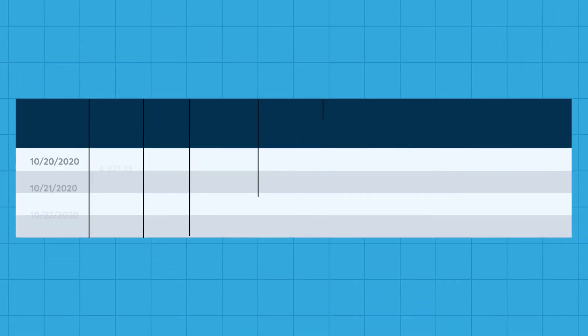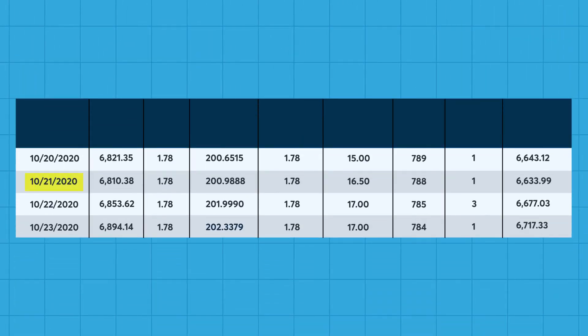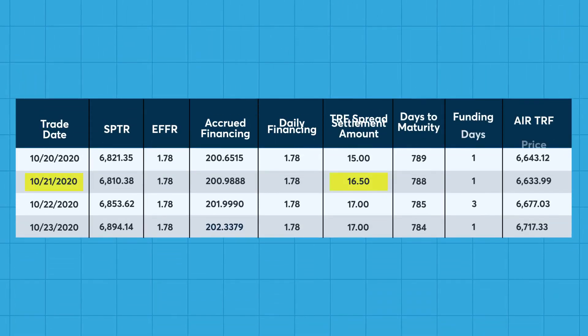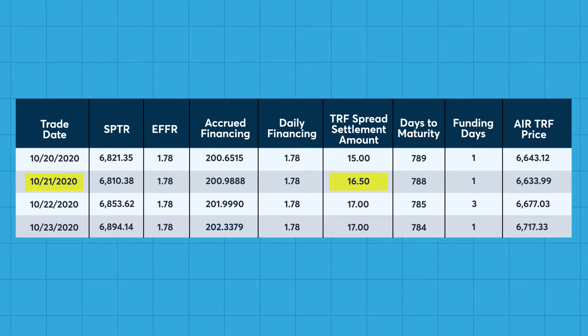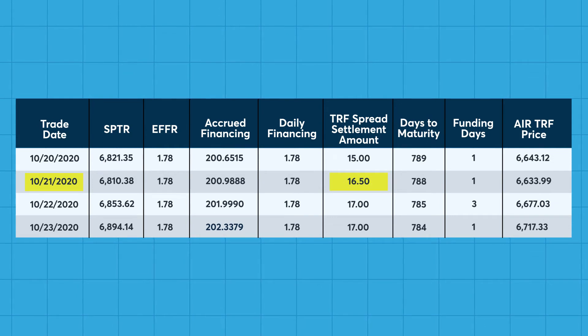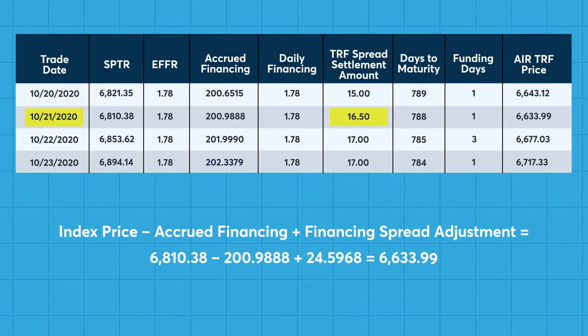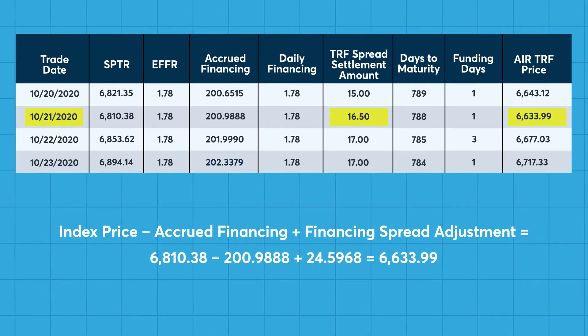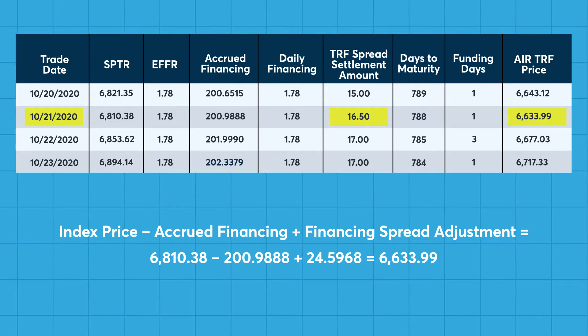Assume the TRF spread settled on October 21 at 16.5 basis points. The daily settlement price of the AIR TRF future would be 6,633.99.